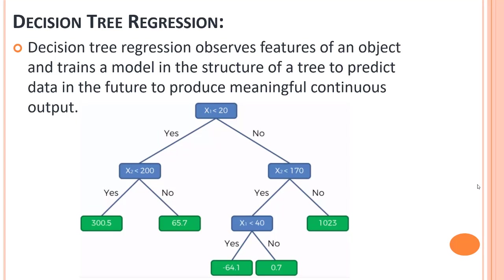Now, as we have learned about decision trees, let's implement it in a regression problem. It is quite similar to what we did for the classification problem, but now it will provide us continuous output. Whatever answer we get will be in continuous format, whereas previously in classification we were having discrete values.